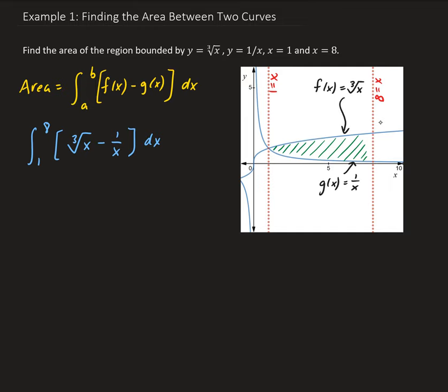Now we go ahead and find the integral. This is the integral from 1 to 8 of x to the 1/3 minus 1 over x, with respect to x. Taking the integral: x to the 1/3 gives us x to the 4/3, divided by 4/3, which gives us 3/4 times x to the 4/3, minus the integral of 1 over x, which is just the natural log of x.